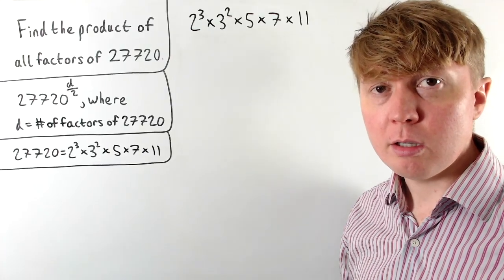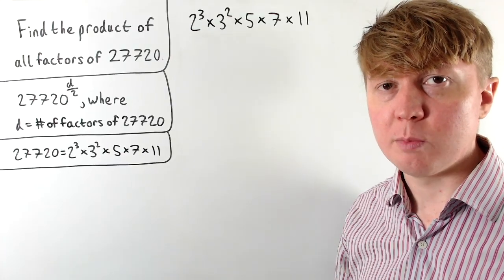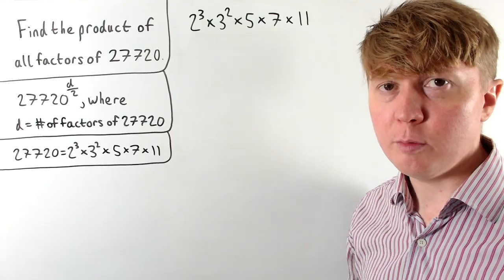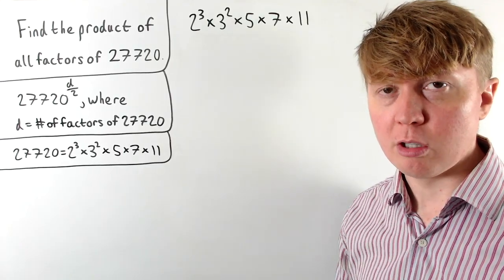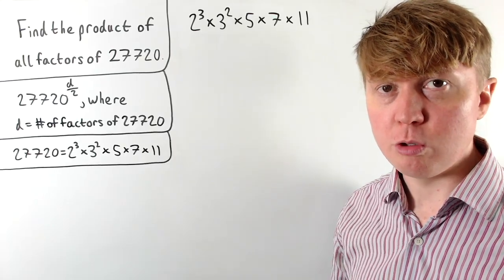So this leads us to a quite neat combinatorial argument we can use to calculate exactly how many factors it has. We can think about this as constructing one of its factors by using all of the prime factors. So first of all, we've got the choice of how many 2s go into this number. So we could have 0 2s, or we could have 1 2,